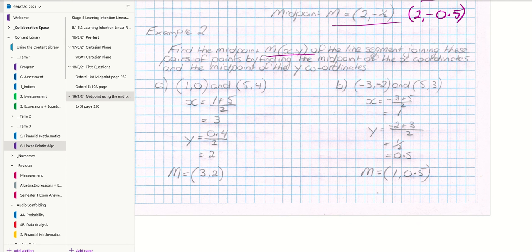Find the midpoint M, X, Y of the line segment joining these pairs of points by finding the midpoint of the X coordinates and the midpoint of the Y coordinates. So our first one, X, Y. Second one, X, Y. So our two X's, 1 and 5. 1 plus 5 divided by 2 to find halfway between them. 6 divided by 2 is 3. And our Y's. So our Y's, looking at them, is 0 and 4. So we've got 0 plus 4 divided by 2. 4 divided by 2 is 2. So my midpoint is the X that I found and the Y that I found. 3 comma 2.